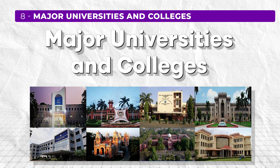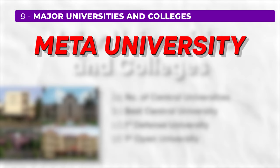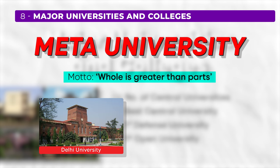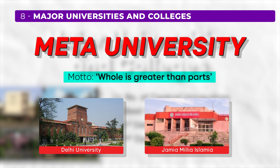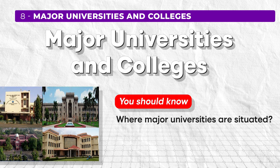The next topic you should know for UGC Net Paper 1 is major universities and colleges — every year you will find at least one question on this section. You need to know how many central universities are there in India, which university is awarded as the best university, and which is the first defense university or first open university. You should also go through the topic of meta universities. A meta university's motto is that the whole is greater than its parts. Delhi University started the first meta university by collaborating with Jamia Millia Islamia to jointly start a program and award a joint degree from both universities. You should also know the locations of Delhi University, JNU, Jamia Millia Islamia, and others.